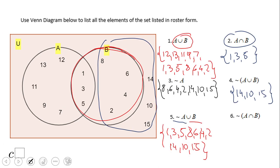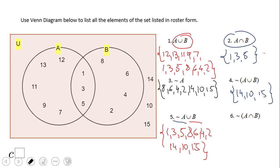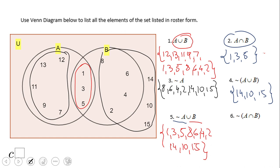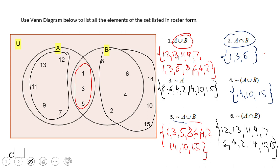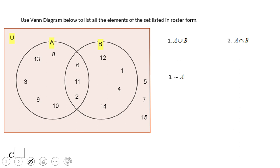Let's take a look at number six, the last one. This one is the complement of the intersection. We already have the intersection — it's right here. You can also look at the Venn diagram. The intersection is represented by the common region. The complement is going to be everything outside that: 12, 13, 11, 9, 7, 6, 4, 2, 14, 10, and 15. Go ahead and try this one and we'll see you back soon.